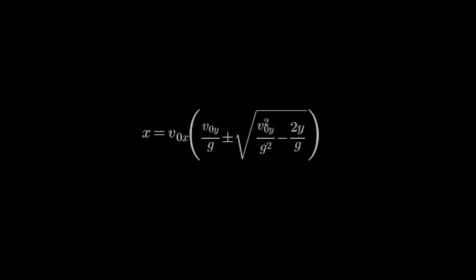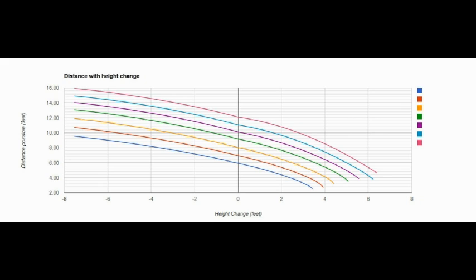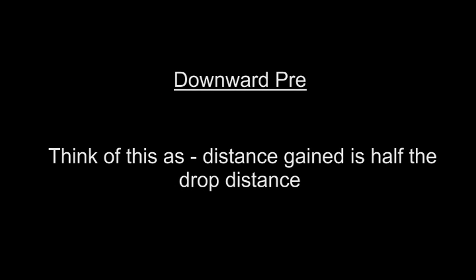Complex enough that I hesitate to do it in my head when figuring if I can make a jump. I have used this equation, observation of skilled traceurs, and calculated, graphed, and extrapolated to give a rule of thumb which may not be exactly accurate, but will be easily calculated in your head with reasonably small error. This data shows that for every two feet of drop, the average traceur will gain one foot of distance in their precision. An upward precision, however, has a greater effect, losing around one foot of distance for every one foot of height. And at extremes, even more.